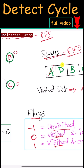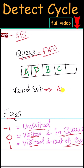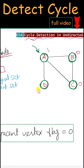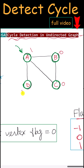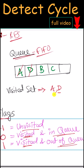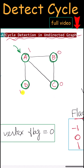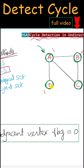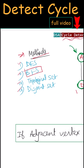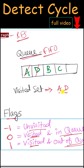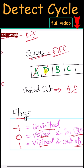Next we have D in our queue. We remove it from the queue and put it into the visited set, so its flag is modified to one. We then look for adjacent vertices of D. The only adjacent vertex is A, which already has flag one, so it is already visited. We cannot take it, so we are done with D.